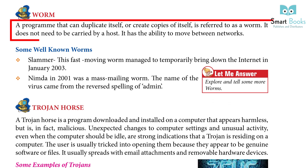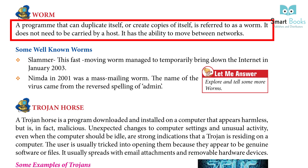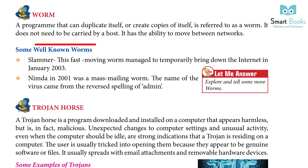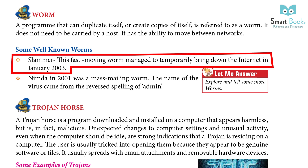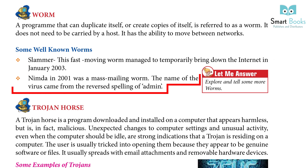Worm: a program that can duplicate itself or create copies of itself is referred to as a worm. It does not need to be carried by a host and has the ability to move between networks. Some well-known worms: Slammer — this fast-moving worm managed to temporarily bring down the internet in January 2003. Nimda in 2001 was a mass-mailing worm; the name came from the reverse spelling of 'admin'.